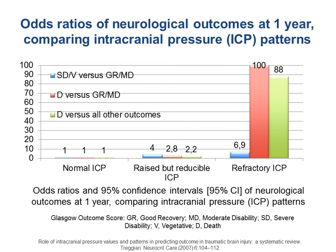If you lose control, if you are not able to control the intracranial hypertension — as you can see in the slide, the green bar — that is 88 times higher compared to normal IICP. So IICP kills, and if you are not able to control it, whatever you use for controlling IICP, you have a negative effect.